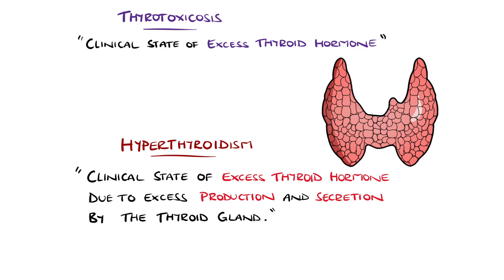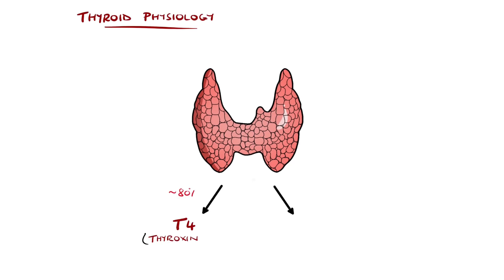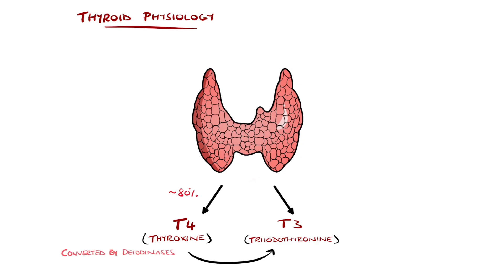Normally, the hormones produced by the thyroid include about 80% thyroxine, also known as T4, and to a lesser extent triiodothyronine, T3, with T4 being converted to the more active T3 at the tissues.